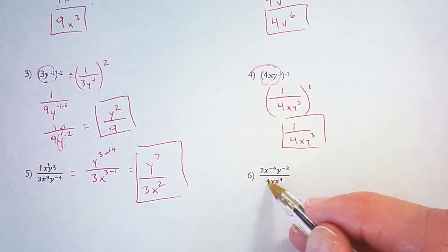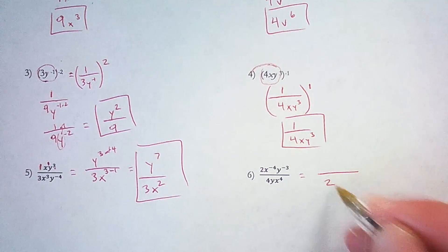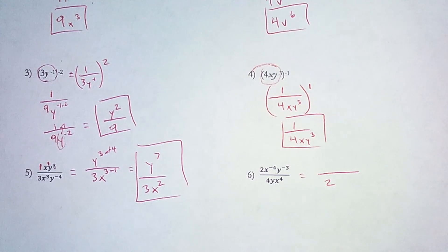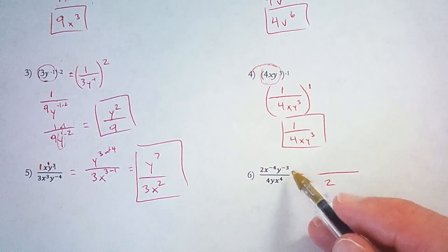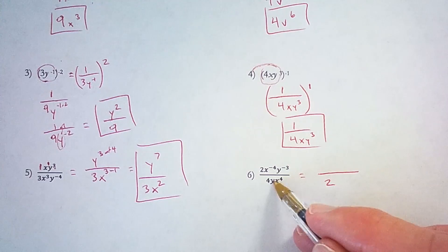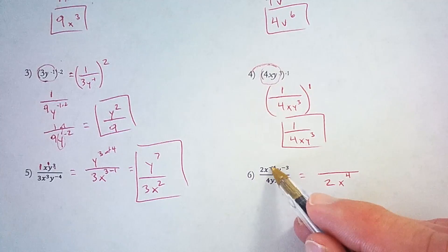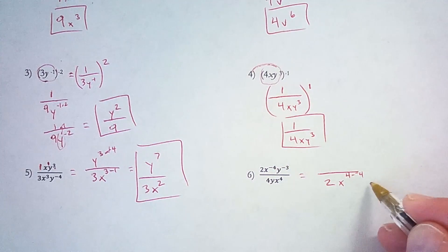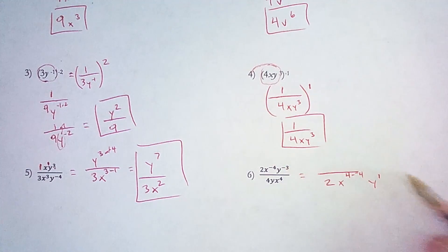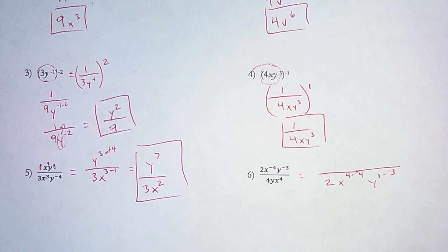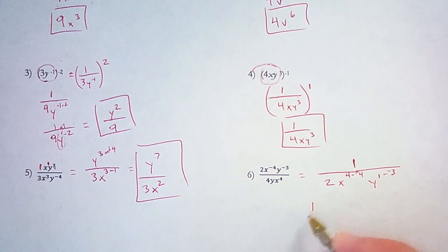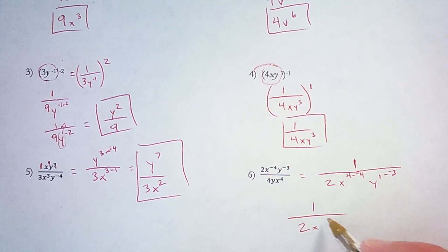Then we have 2 over 4, which is 1 over 2, so that's 2 in the denominator. I'll only write the 1 in the numerator if that's all that's going to be left. The y's and x's both seem to be bigger in the denominator, so that's x to the 4th minus negative 4, and y to the 1st power minus negative 3. So we are subtracting those exponents as we move them from numerator to denominator. There's nothing left on top, so I need to write that 1. So I've got 1 in the numerator and then 2x to the 8th and y to the 4th.